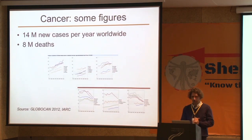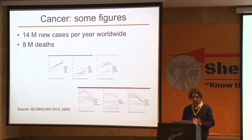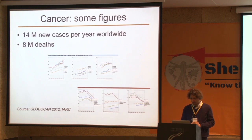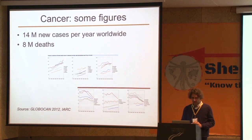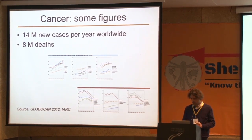First, a few figures about cancer. Today, cancer accounts for about 14 million new cases per year and 8 million deaths. If you look at the figures, the incidence is continuously increasing — it's going to double within the next 15 years. And mortality is decreasing, but this picture is very contrasted between countries and between cancer types.